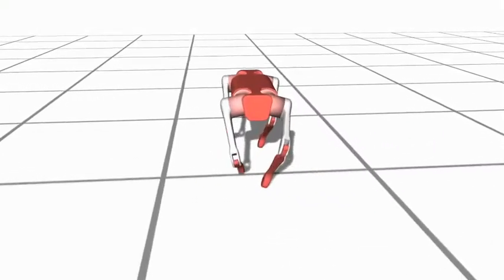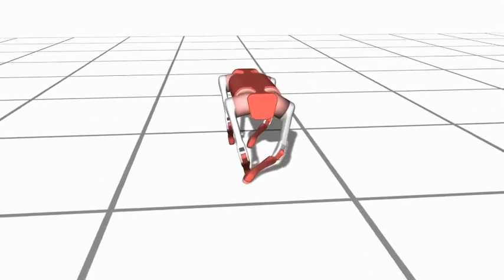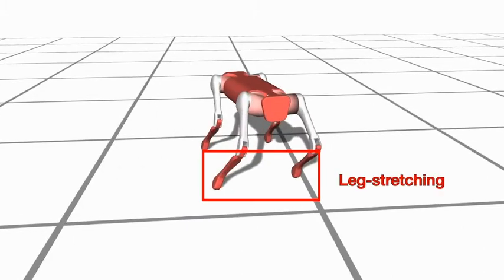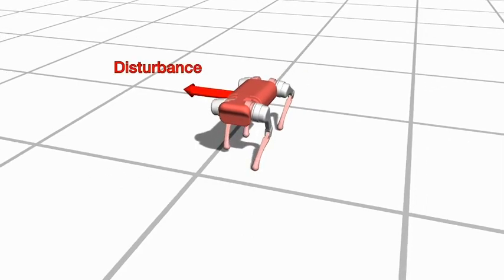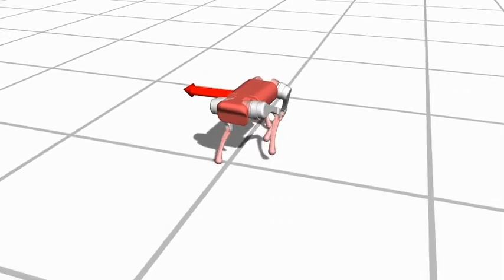However, such heuristic strategies tend to yield too aggressive displacements for the feet when the target motions are highly dynamic, and consequently it often fails to reject external disturbances.